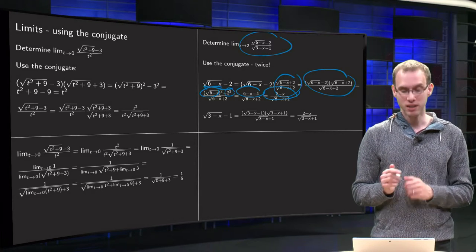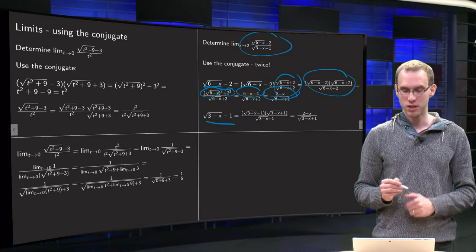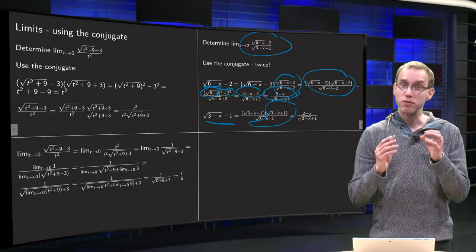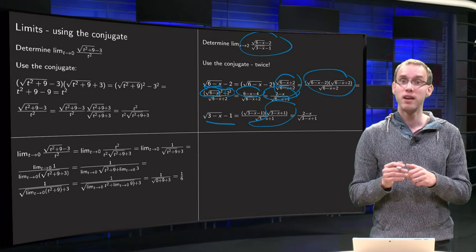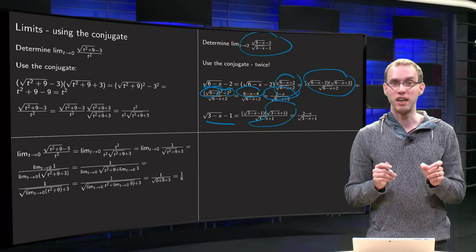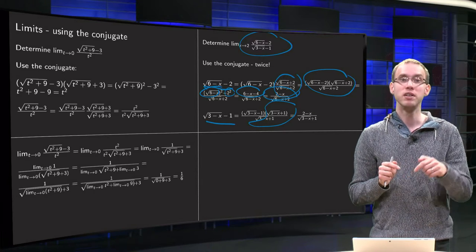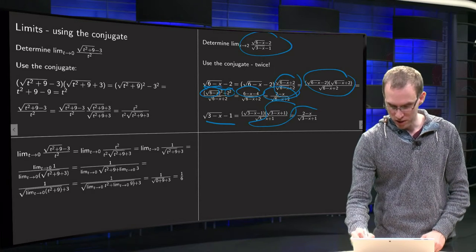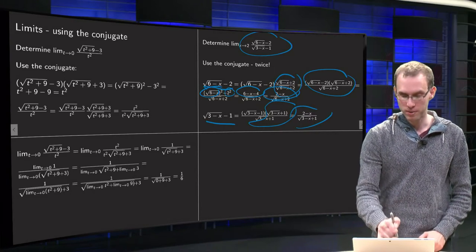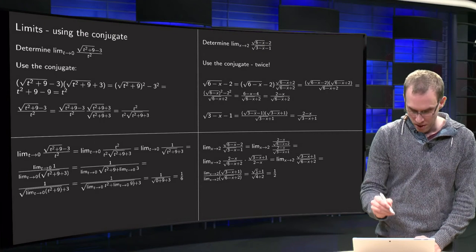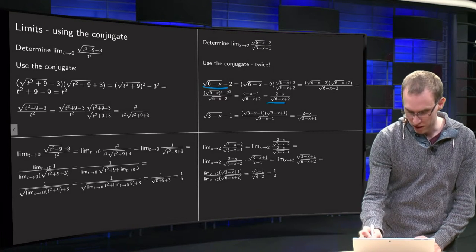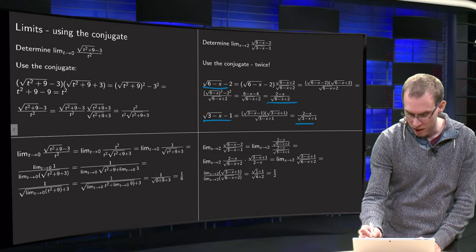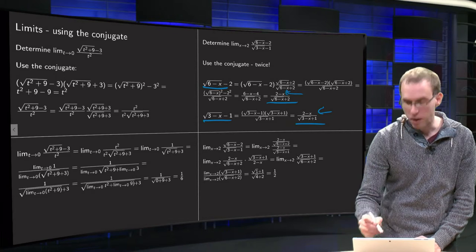And then we do exactly the same trick with the square root of 3 minus x minus 1. So we multiply by 1, this factor over here. Square root of 3 minus x plus 1 over square root of 3 minus x plus 1. Then we simplify the numerator. It is again of the form a minus b times a plus b. That will be a squared minus b squared, or 3 minus x minus 1, so 2 minus x over square root of 3 minus x plus 1. So what do we have? We have our numerator simplified to this expression and our denominator simplified to that expression. And observe, the dangerous parts here are now the same.